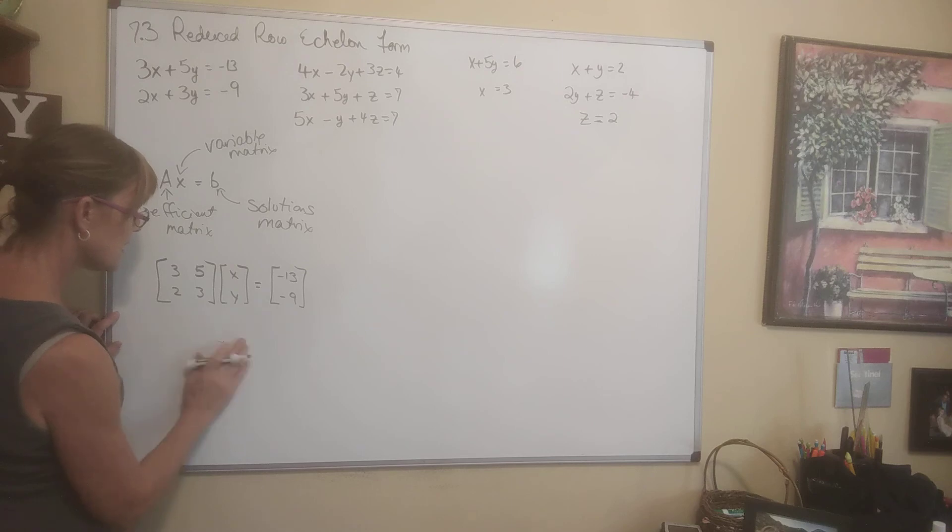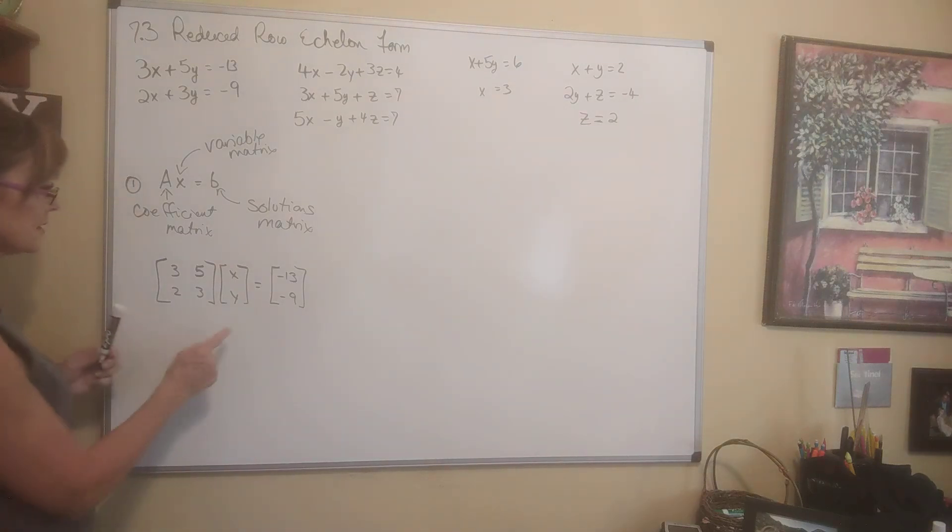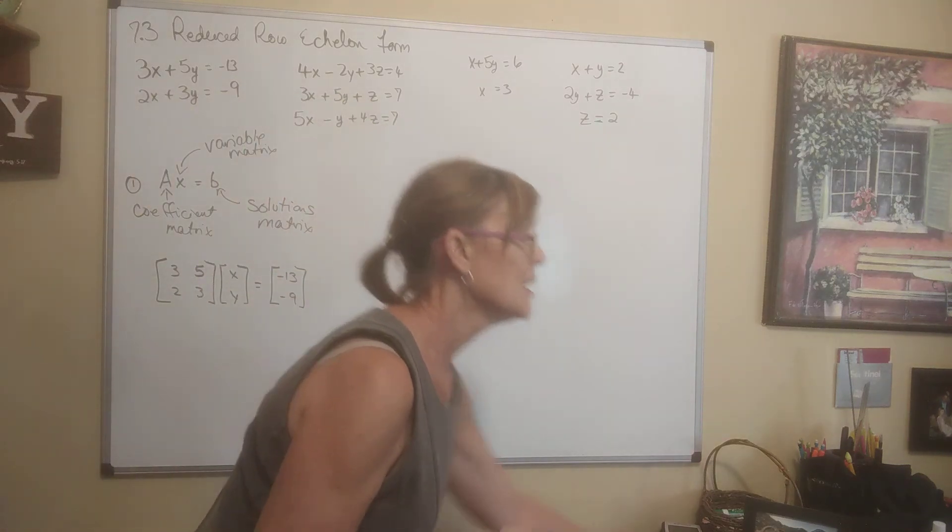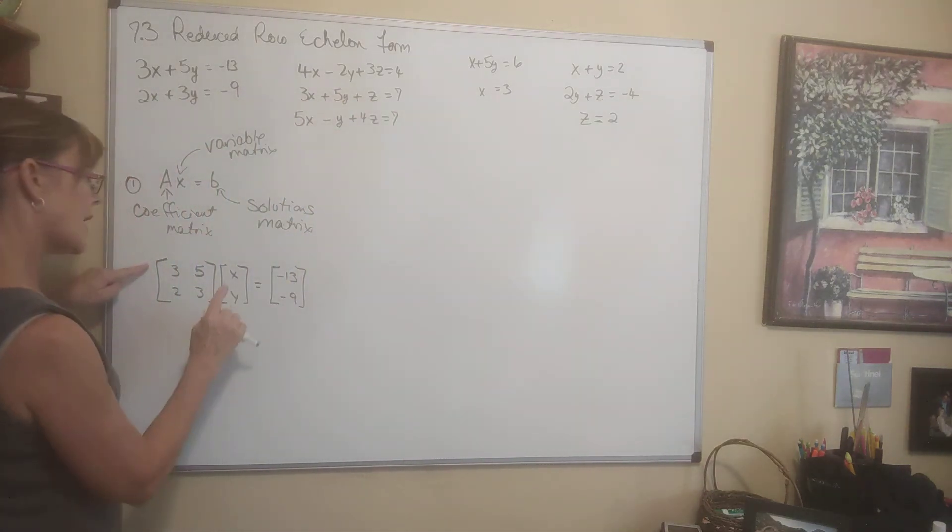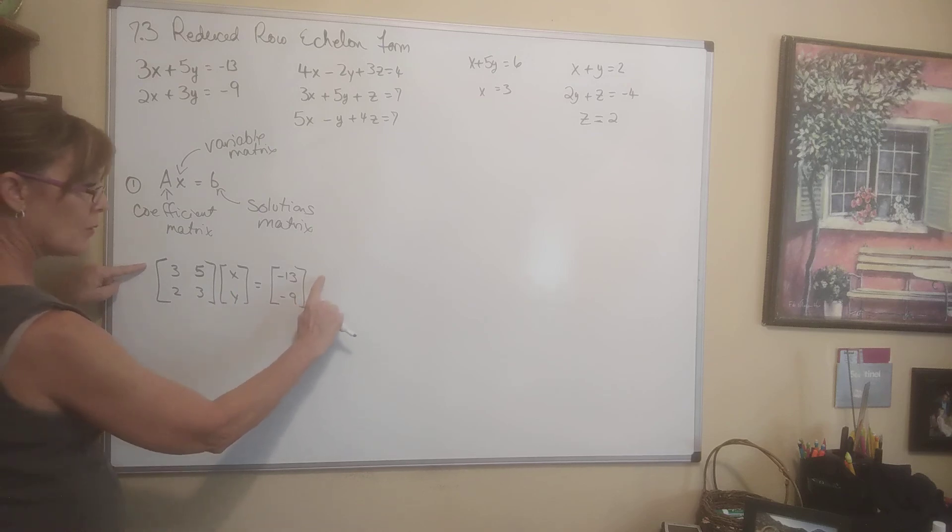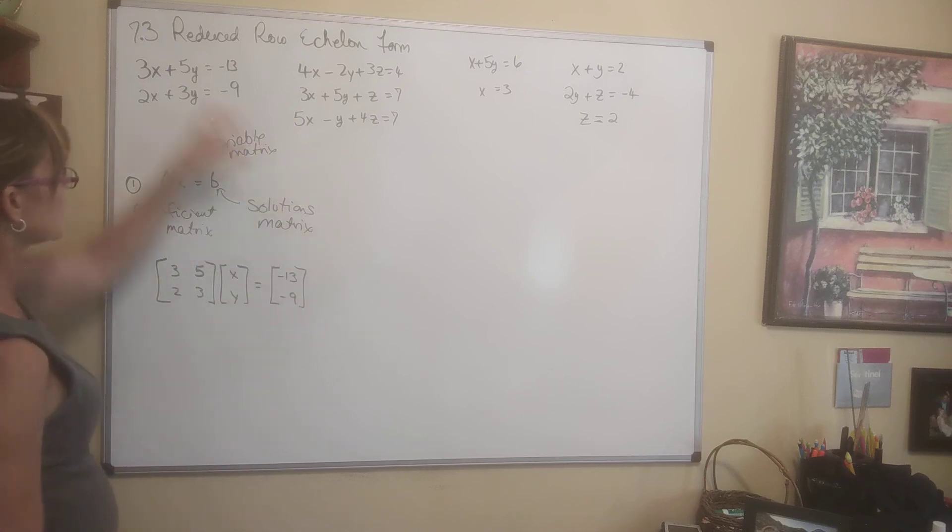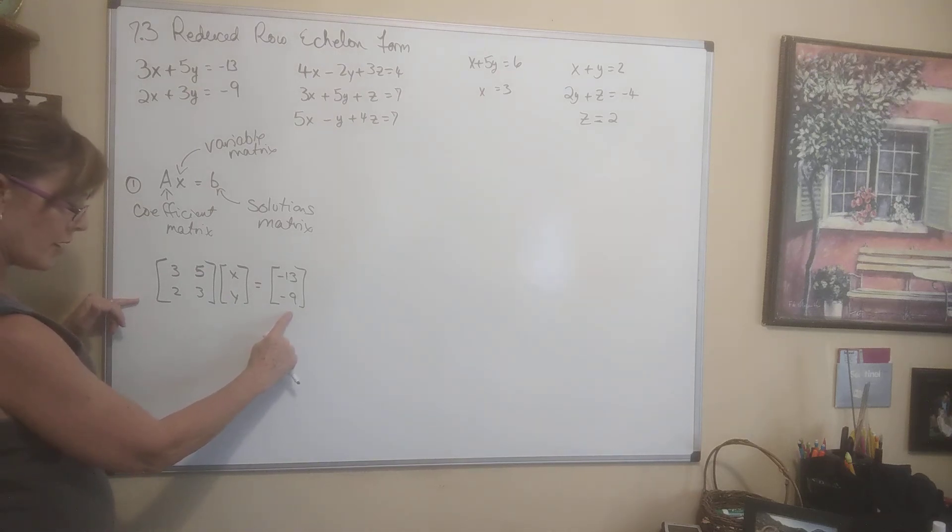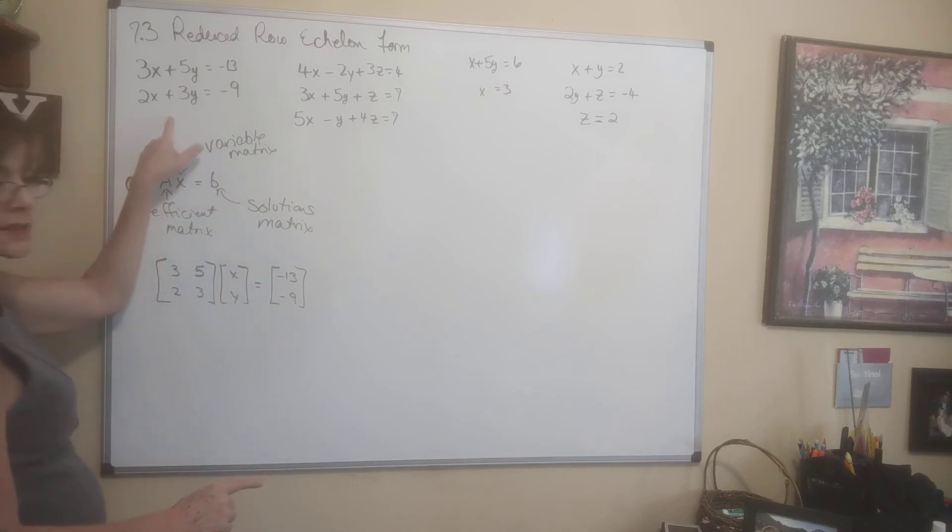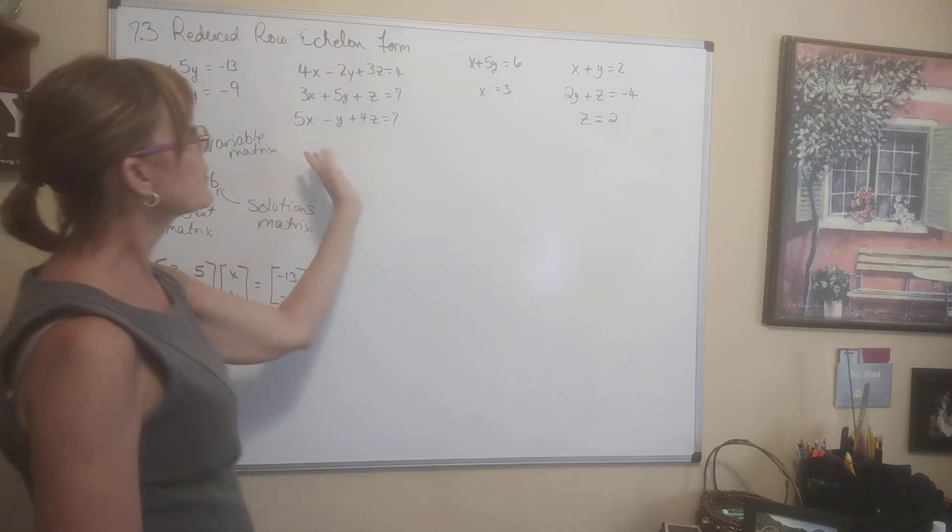Now let's just see, does this equal this? It will, because remember how you multiply matrices. It's row 1 by column 1 will give me element 1,1. So 3 times X plus 5 times Y gives me equals negative 13. That's that first equation. Row 2, column 1 will give me the element in row 2, column 1. 2X plus 3Y will give me equals negative 9. That's the second one. So this is how you convert this to a matrix equation.